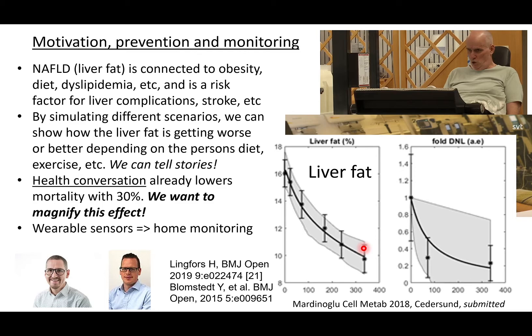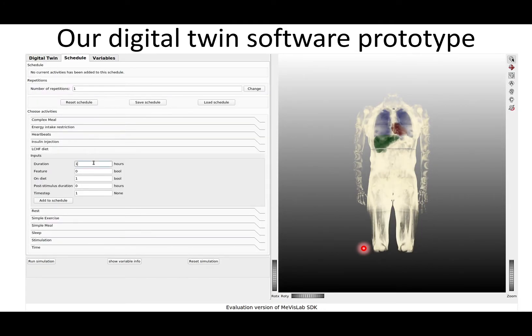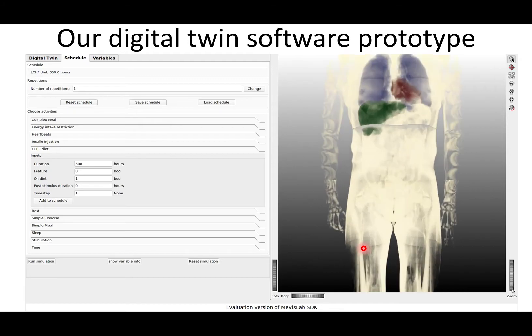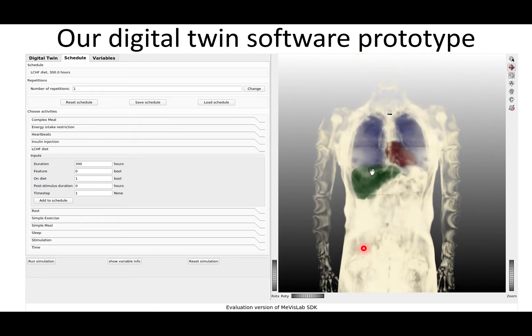After the health conversation, we will offer people the option to take this digital twin home, combining it with wearable sensors to continuously update their understanding of themselves — what happens and how their choices make a difference. At home, they can then do this type of simulation: for example, a 300-hour LCHF (low-carbohydrate high-fat) diet.